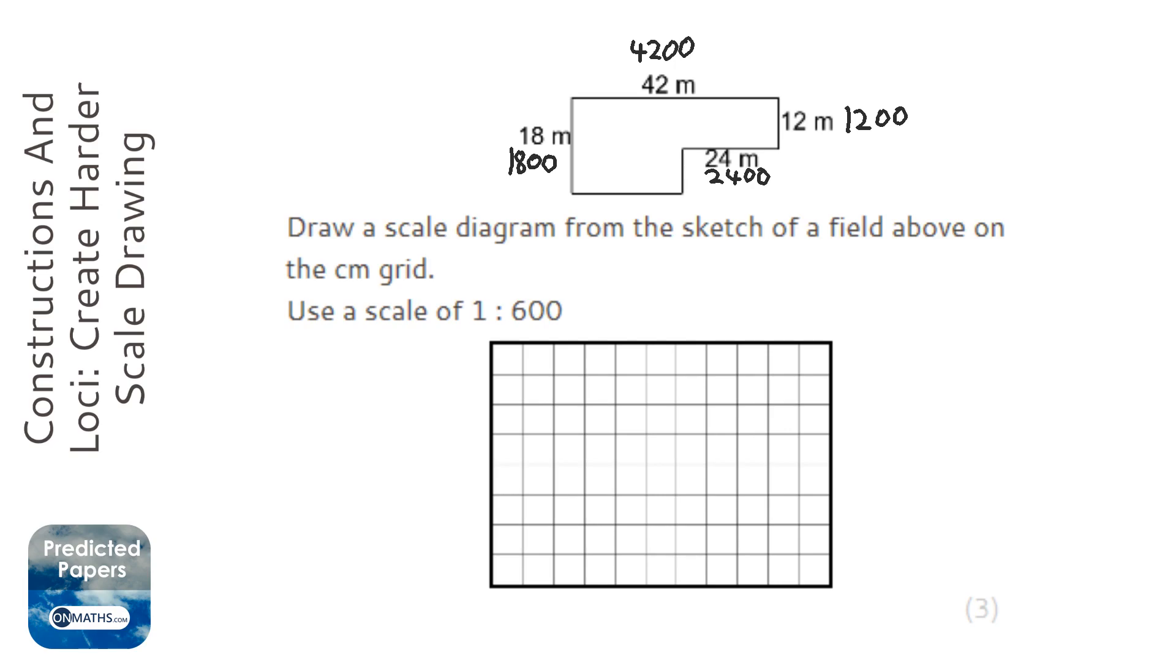Okay, next thing I need to understand is scale. So the scale means 1 on the diagram is 600 in real life. So if I've got the real life one, all I need to do is divide it by 600 to get the amount of centimeters on the diagram.